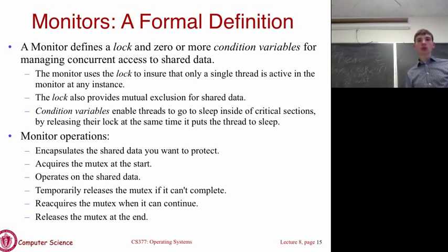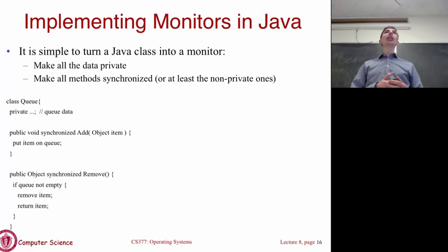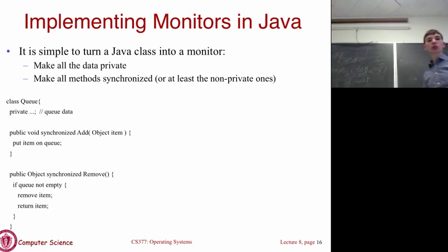Java makes monitors easy to use. If you want to make a class a monitor, you use the synchronized keyword on your methods. This guarantees mutual exclusion — only one thread can execute synchronized methods at once. For example, a queue class with synchronized add and remove methods ensures those operations don't happen concurrently. All data should be private so external code can't bypass the synchronization.